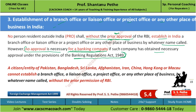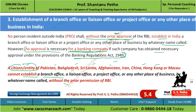Another important point: a citizen or entity of Pakistan, Bangladesh, Sri Lanka, Afghanistan, Iran, China, Hong Kong, or Macau cannot establish a branch office, liaison office, project office, or any other place of business by whatever name called, without prior permission of RBI. Note carefully - whether you are a citizen or an entity of these countries, RBI permission is mandatory.